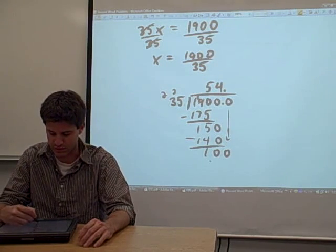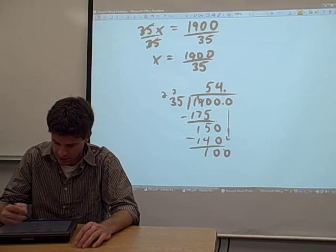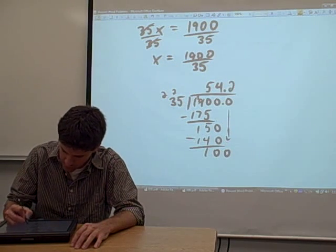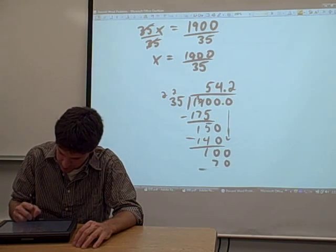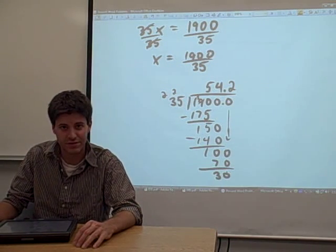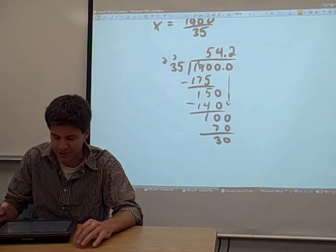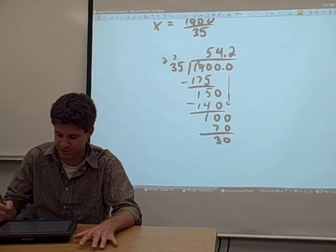So how many times does 35 go into 100 now? And I think the answer is 2. Multiply the 2 times the 35, and you get 30. We could continue this process. I'm going to go one more decimal place, and then I'm going to round this thing off.